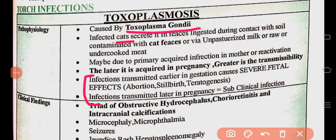Next, we have the TORCH infections. The next topic is toxoplasmosis. Toxoplasma gondii — cats carry this organism and excrete it in their feces. When humans come in contact with cat feces, unpasteurized milk, or raw uncooked meat, the organism enters the body. This causes primary acquired infection in the mother, or reactivation.